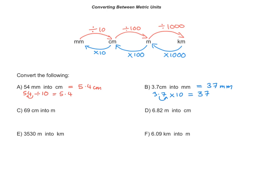Now let's do the next one: 69 centimetres into metres. I'm converting smaller units into larger units, so I will divide. When converting centimetres into metres, I divide by 100. So 69 divided by 100 equals 0.69 — I've moved the decimal place two places to the left because I'm dividing by 100. So 69 centimetres is equivalent to 0.69 metres.